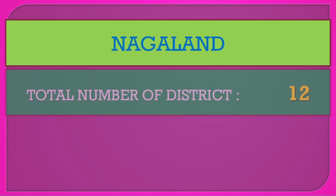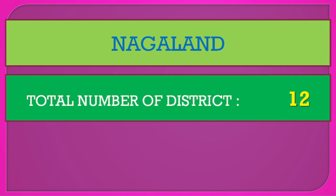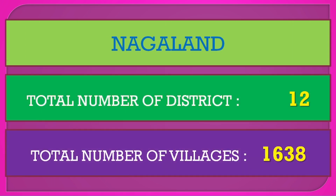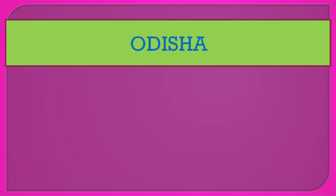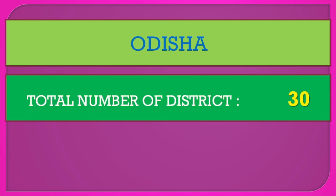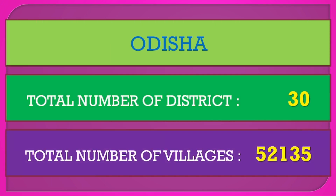Nagaland: total number of districts 12, total number of villages 1,638. Odisha: total number of districts 30, total number of villages 52,135.